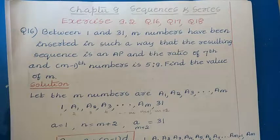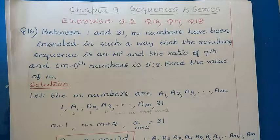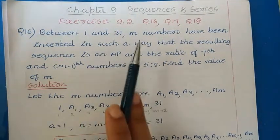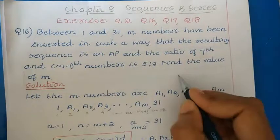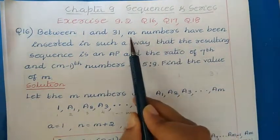Question 16: Between 1 and 31, M numbers have been inserted such that the resulting sequence is an AP. The ratio of the 7th and (M−1)th numbers is 5:9. Find the value of M. In this question, two numbers 1 and 31 are given, and between them we have to insert M numbers.